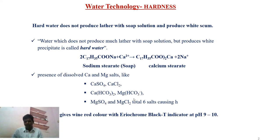The sulphates, chlorides, and bicarbonates of calcium and magnesium are the reason for this hardness. The presence of these salts gives hardness to the water. This water gives wine red colour with an Eriochrome Black T indicator at pH 9 to 10.